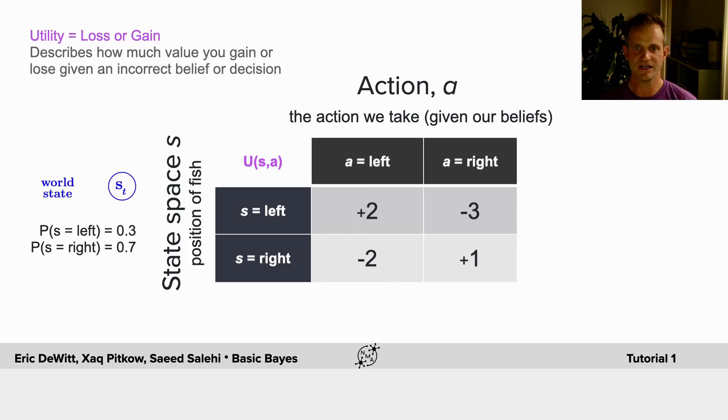In this case, as you see here, it's most costly if you fish on the right side when the fish were actually on the left, and you gain the most when you fish on the left when the fish are actually on the left.